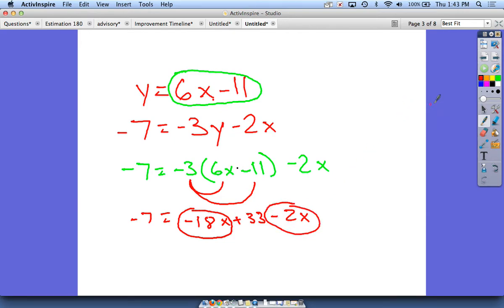So we will combine like terms here. Negative 18x minus 2x, of course, would be negative 20x. So I'm just going to erase this and replace it with negative 20x.